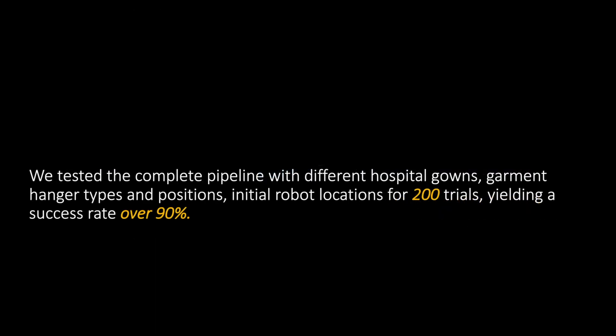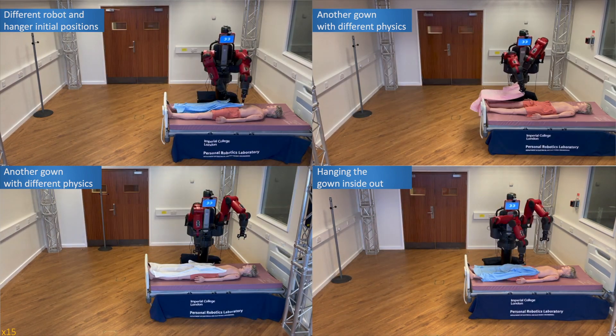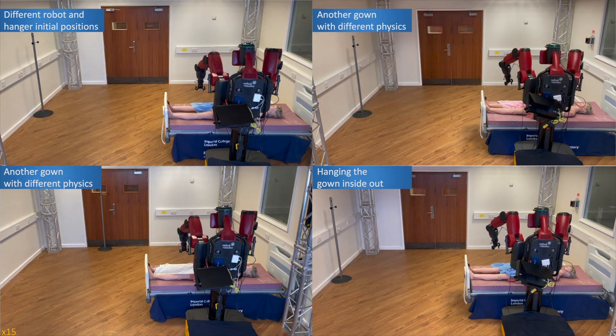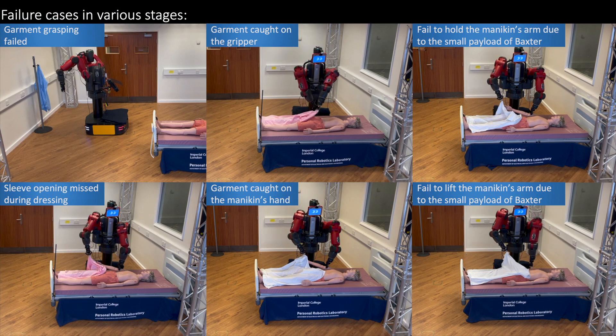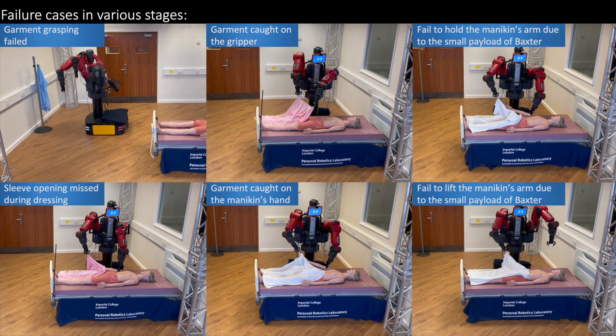We tested the complete pipeline with different hospital gowns, garment hanger types, and positions, and initial robot locations for 200 trials, achieving a success rate of 90%. Details of the failure analysis are presented in the supplementary materials. Thanks for watching.